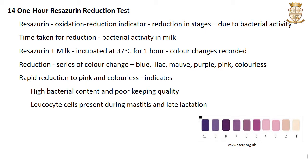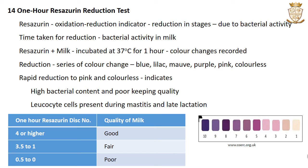The color changes are used as a criterion for bacterial activity in milk. The milk sample containing resazurin solution is incubated at 37 degrees Celsius and the color changes recorded at the end of 1 hour are used for grading milk. Rapid reduction to the pink and colorless stages indicates high bacterial content and poor keeping quality. The resazurin test also helps detect abnormal milk samples since leukocyte cells present in mastitis milk and late-lactation milk also reduce resazurin. Disc number 4 or higher indicates good quality; 1 to 3.5 indicates fair quality; and 0 to 0.5 indicates poor quality.